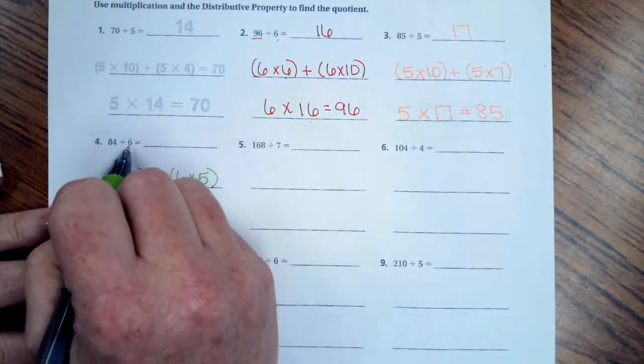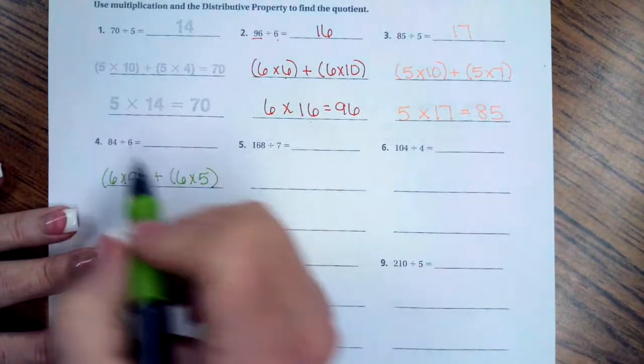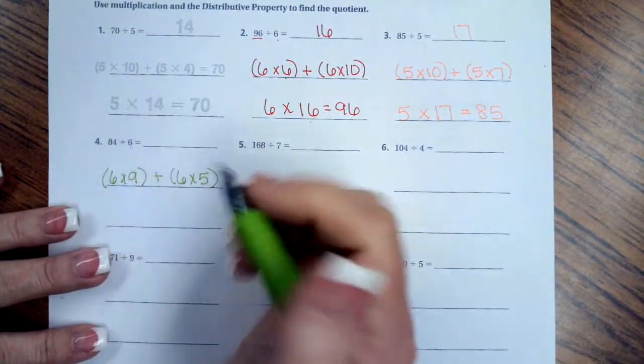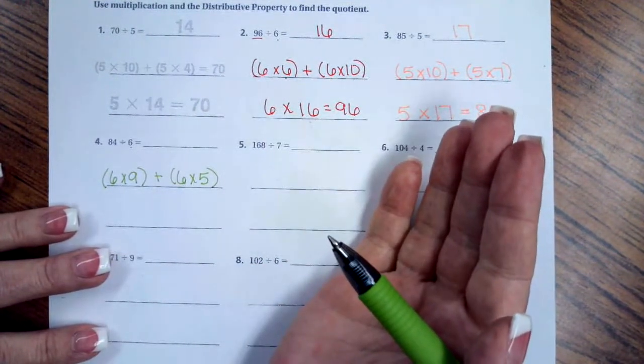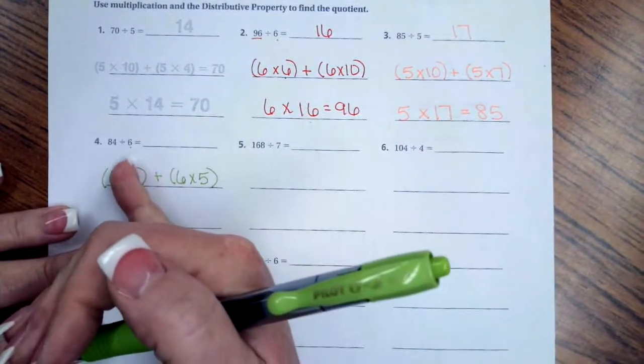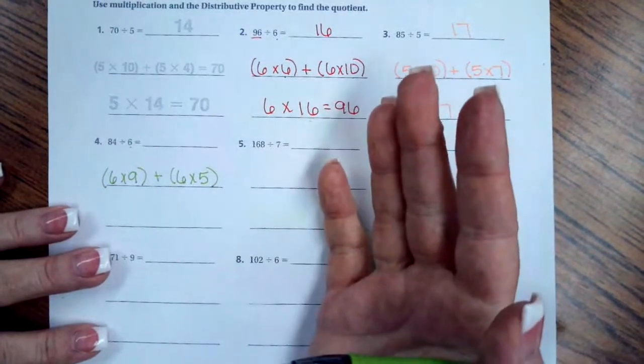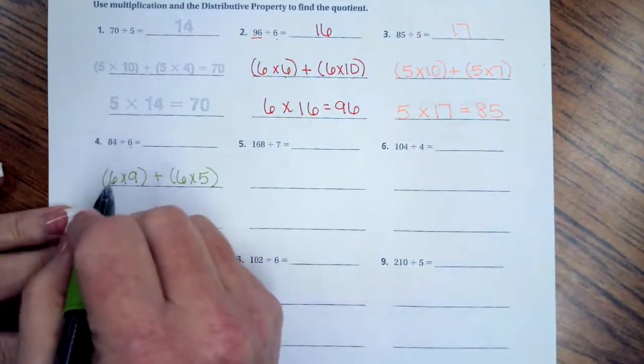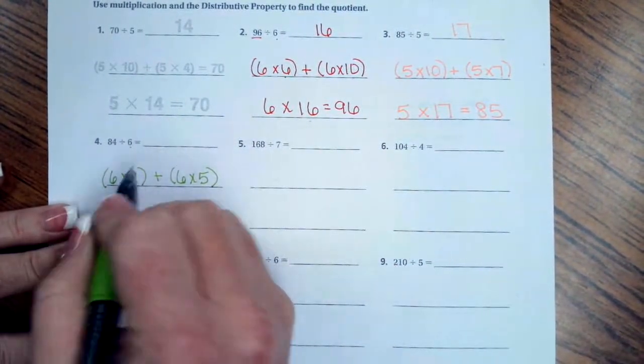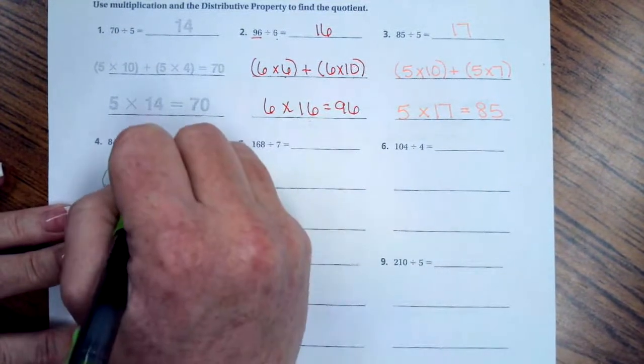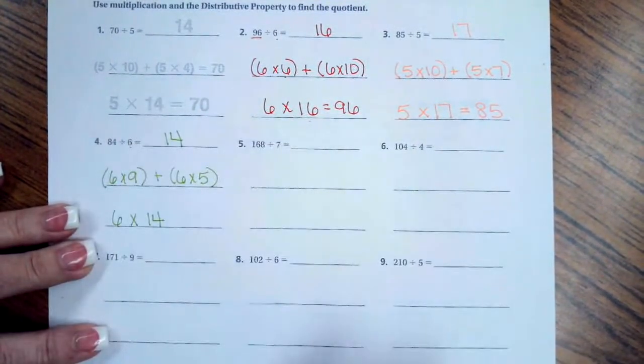So I'm looking for numbers that can divide by 6 that end in a 4. I could have done 6 times 4, which would have left me with 24. And then when I take away 24 from 84, I'm left with 60, and then I would have 6 times 10. You're going to get the same answer. So now 6 times 9 plus 5 is 14. So your answer up here is 14.